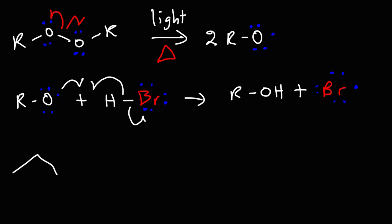In the next step, we're going to react 1-butene with the bromine radical. So the bromine radical is going to react with the double bond. Now, we have two choices in terms of where we should put the bromine atom.